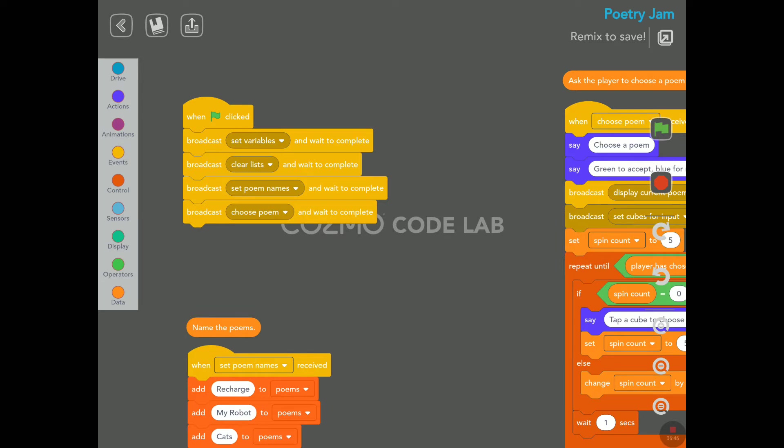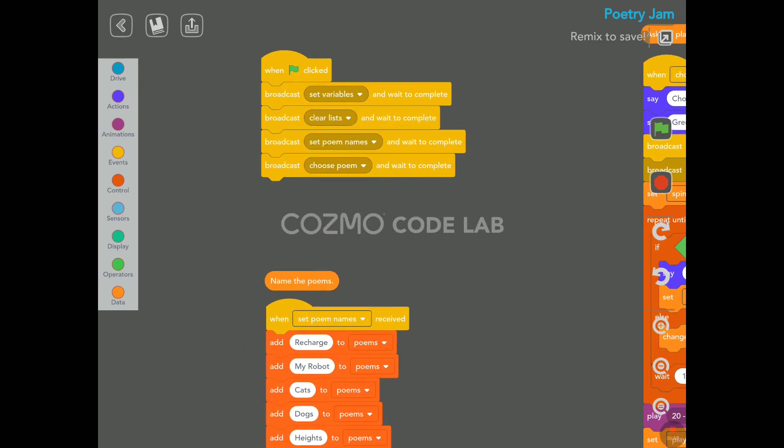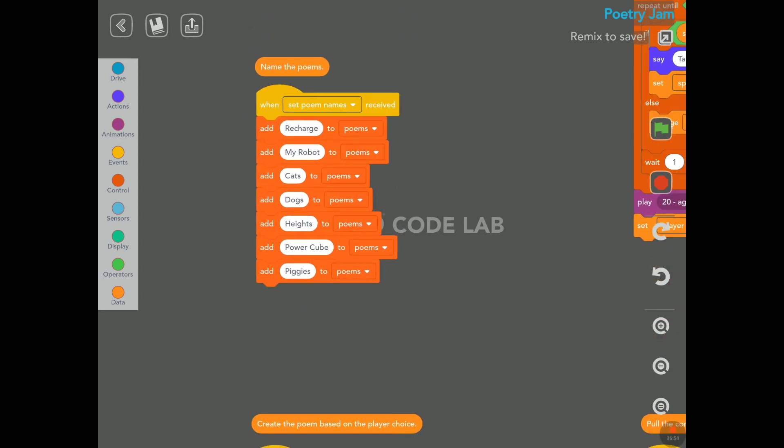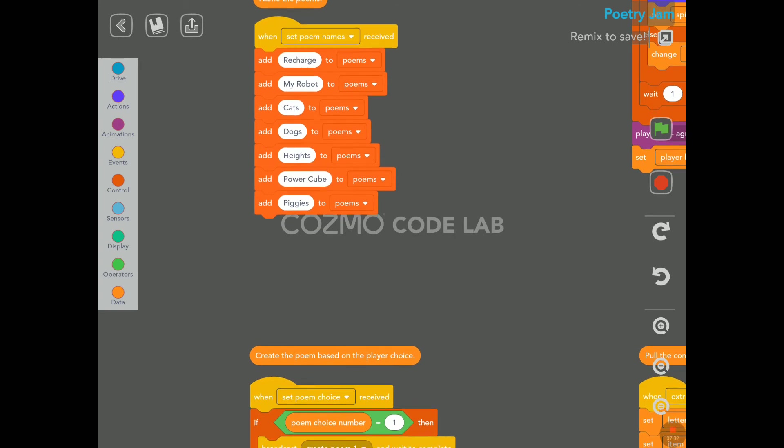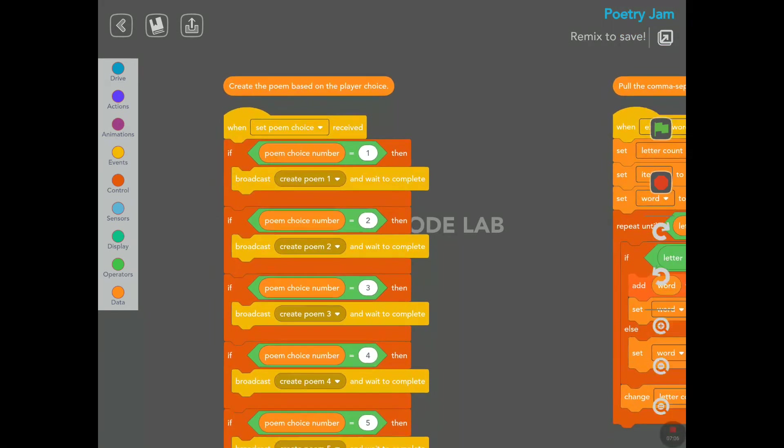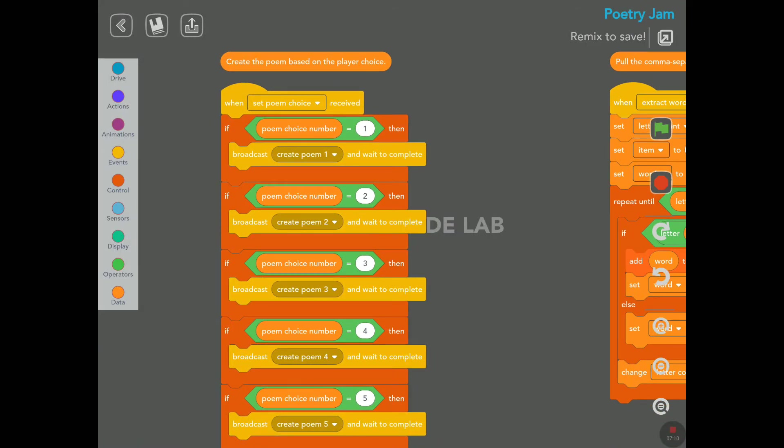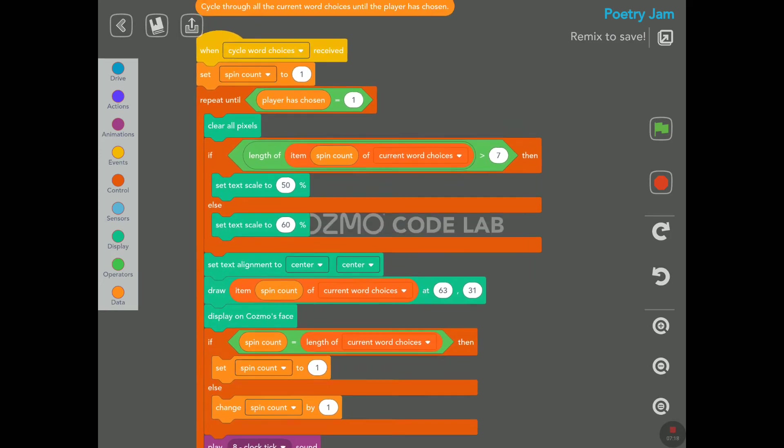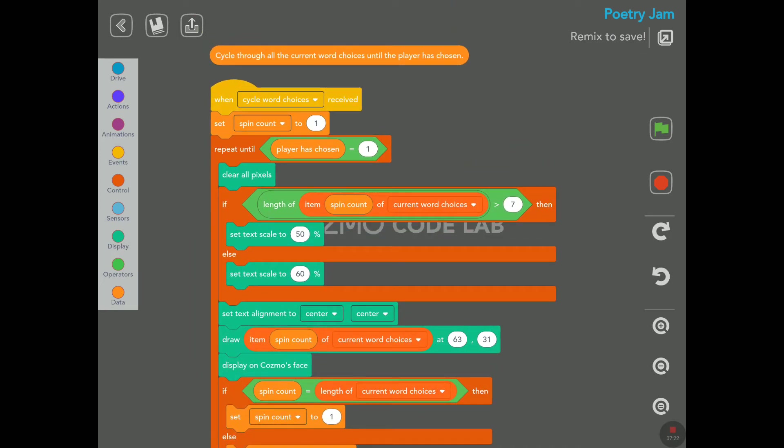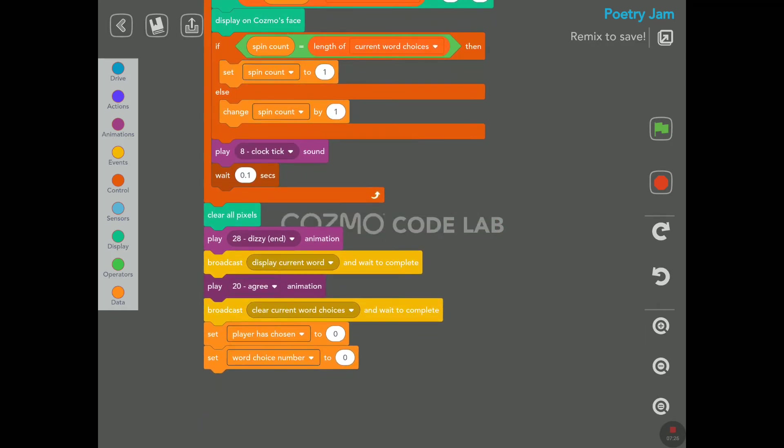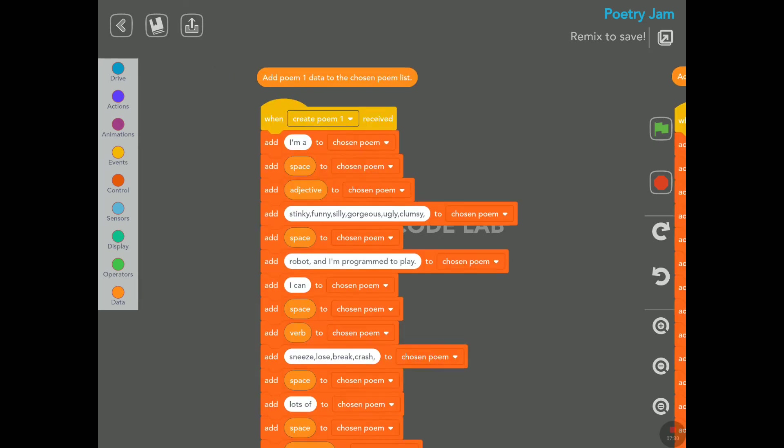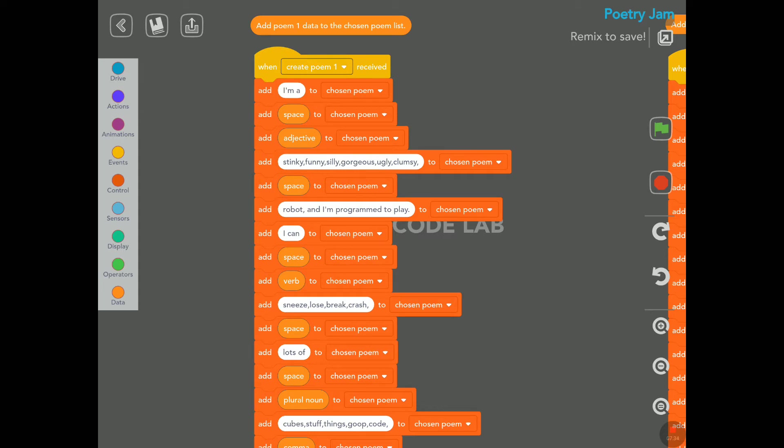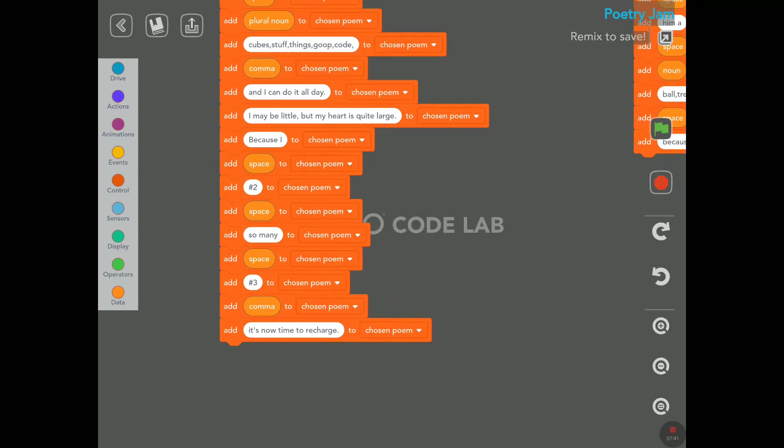I think we saw how the game works. But let's have a look quickly here. So when the green flag is tapped, name the poem. So exactly we saw this: Recharge, my robot, cats, dogs, heights, power cube, and piggies. So it looks like we have a choice of seven different poems. Create the poem based on the player's choice. Seven choices of different poems. Cycle for all the current word choices until the player has chosen. This was all the cycling of the words we saw on Cosmo's face. Add poem one data to the chosen poem list. And again, they're using list here, which was introduced with version 2.4.